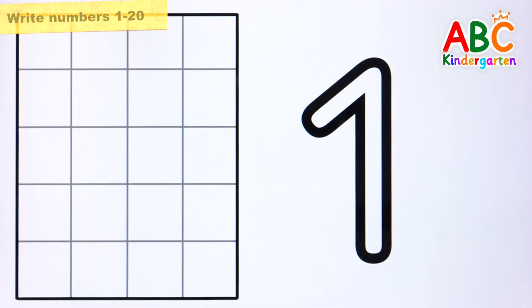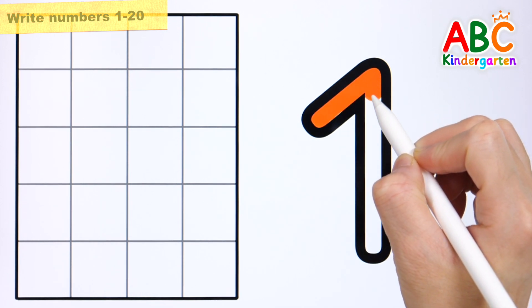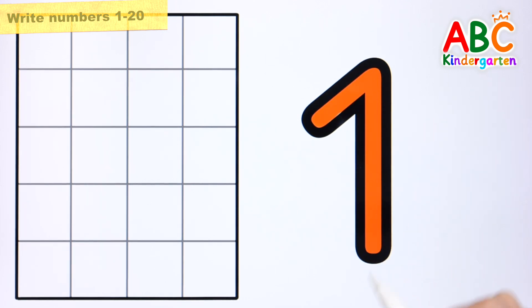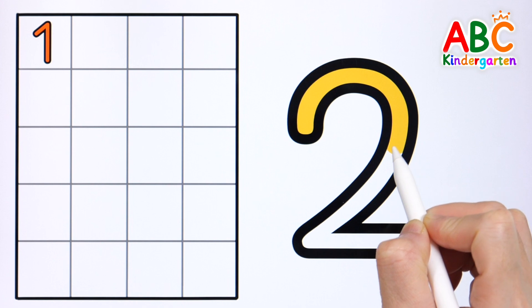Shall we write down the numbers from 1 to 20? Let's write the numbers and list them one by one on the left. One. Let's write down the numbers slowly and correctly.